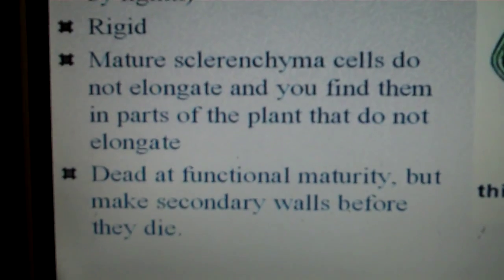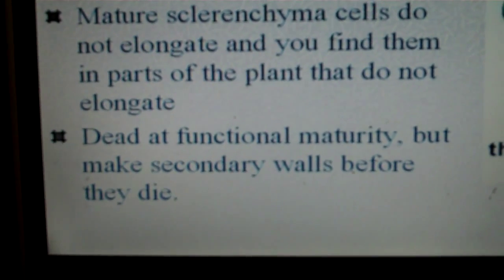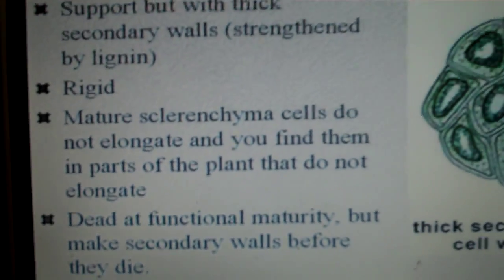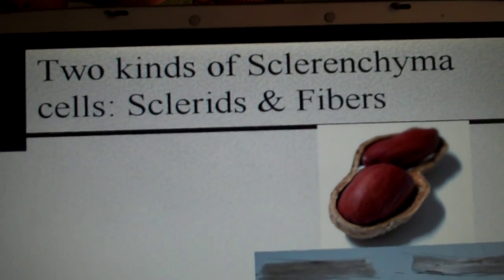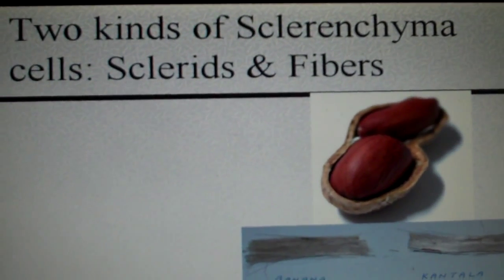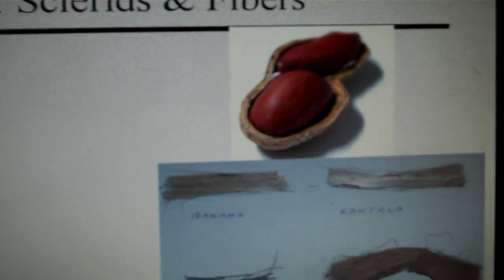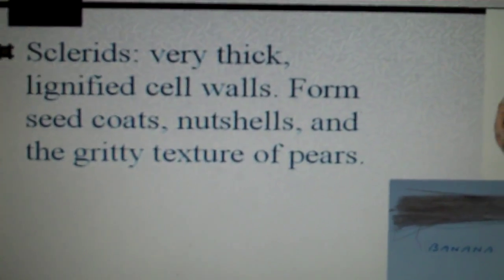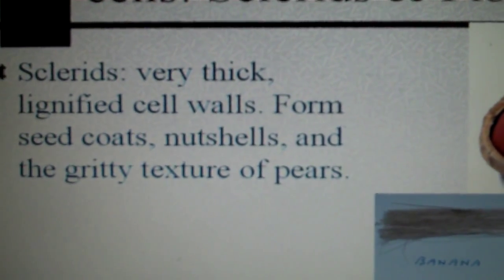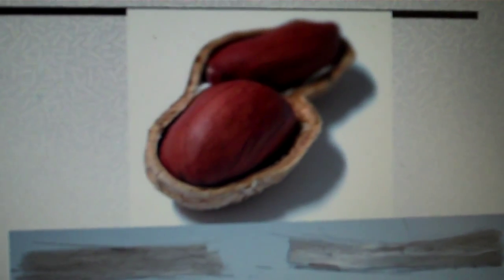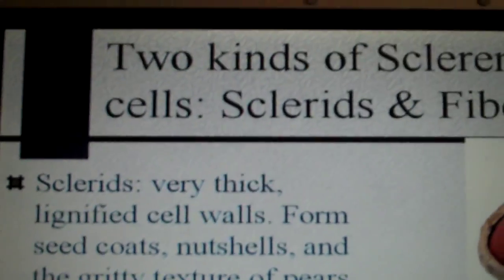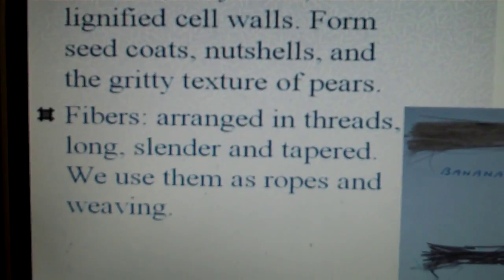Sclerenchyma cells are dead at functional maturity, but before they die, they do make secondary walls. There are two types of sclerenchyma cells: sclereids and fibers. Sclereids have very thick, lignified cell walls. They form seed coats, nutshells, and the gritty texture of pears. So if you ever eat a pear and it feels a little different than an apple, that's because of the sclerenchyma cells.